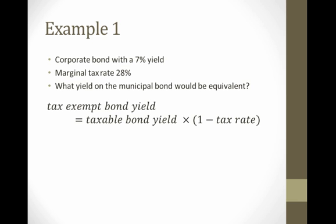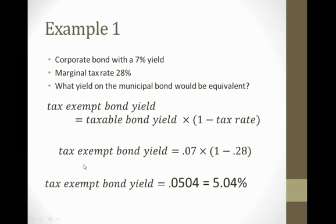Let's go back to our basic equation that we're going to use in all three examples, that equates the tax exempt bond yield to the taxable bond yield. Now let's fill in what we have and solve for what we don't. We have the taxable yield at 7%, we have a tax rate at 28%, so we simply solve for our tax exempt bond yield and get a little bit over 5%.